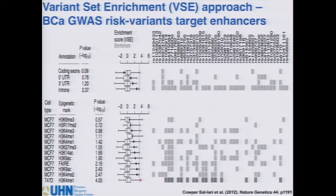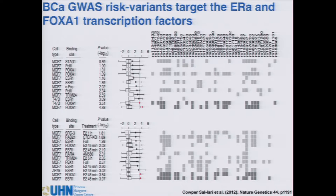VSE computes a null distribution of what overlap is expected by chance between risk SNPs for a given disease and your feature of interest, then computes the actual observed value. Looking at coding exons, 5-prime and 3-prime UTRs, and introns for breast cancer risk regions, there's a lot of overlap with introns, but none of these are significant — just what you'd expect by chance. However, running this analysis with ChIP-seq tracks for histone modifications shows enrichment within enhancers marked by K4 monomethylation. We're about to release VSE — send me an email to be kept in touch with the official release.